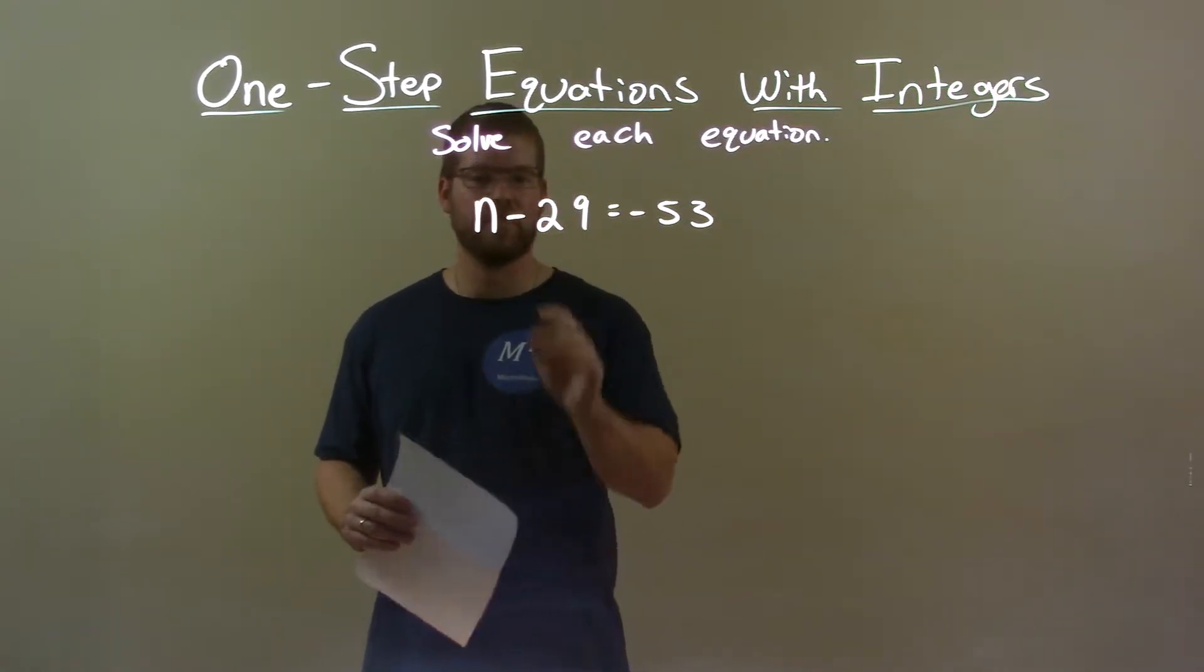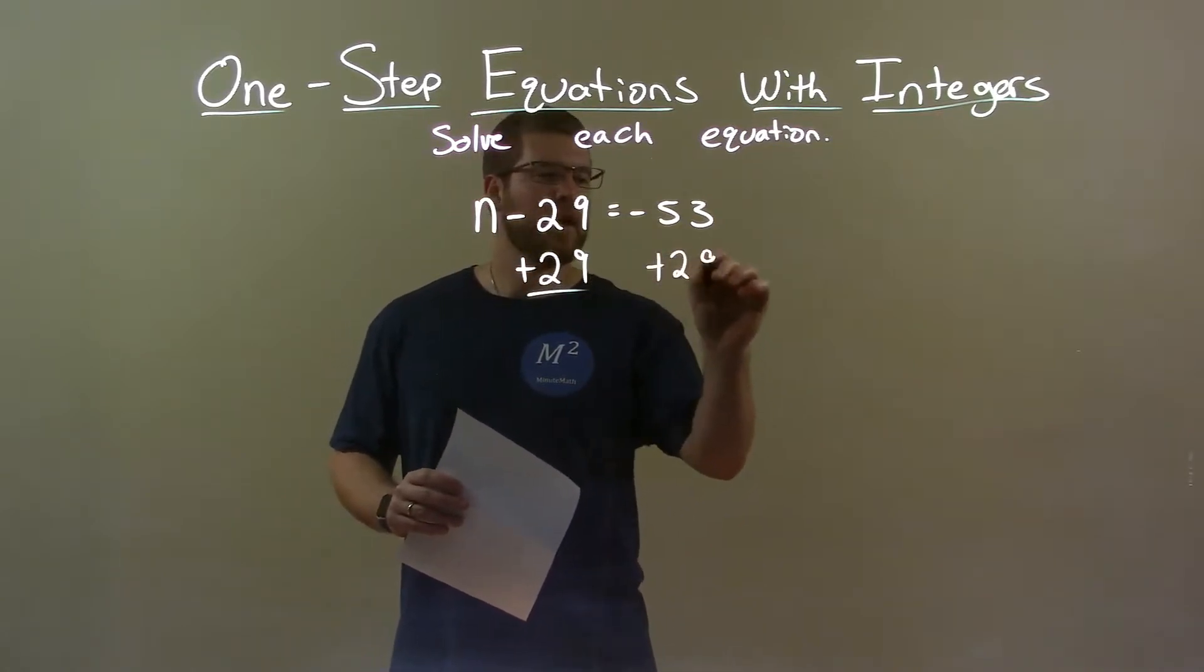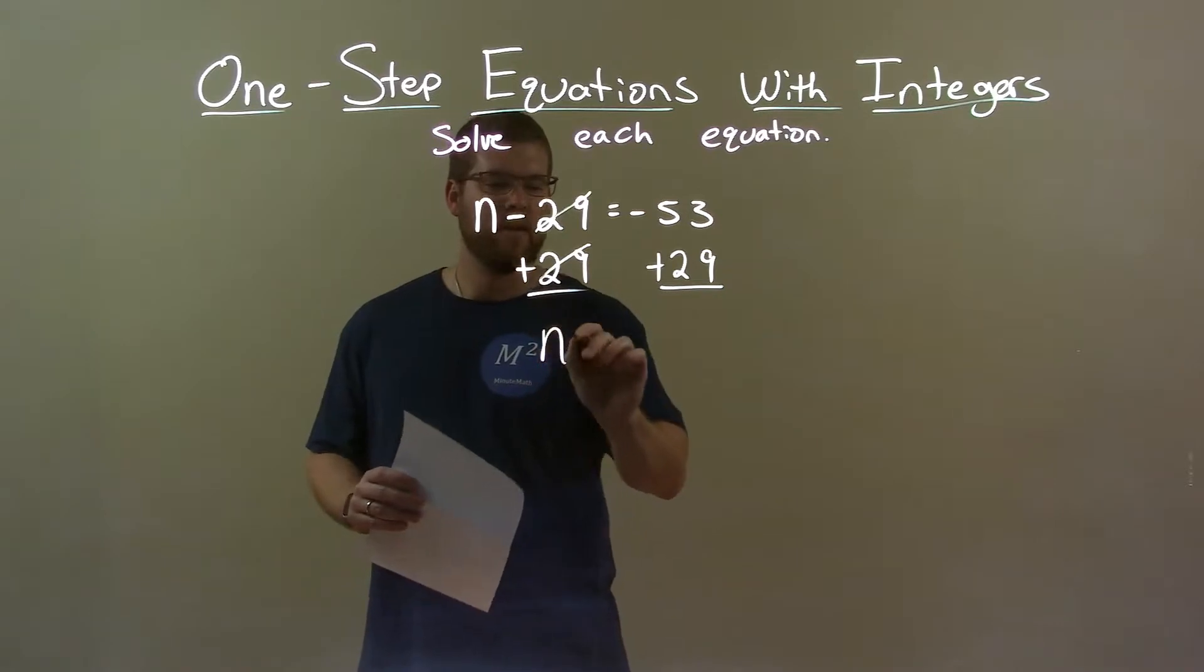Opposite of subtraction is addition. So I'm going to add a 29 over the equal sign to both sides. 29 to cancel on the left, giving me n by itself.